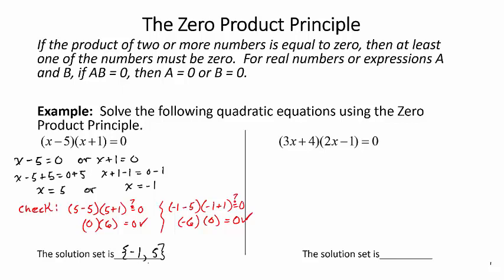You'll notice I'm using the set brackets to indicate the set of numbers that are both solutions to this equation. So let's do this next example. We have the quantity 3x plus 4 times the quantity 2x minus 1 equal to zero. So I know that either 3x plus 4 equals zero, or 2x minus 1 equals zero, right? One of the two factors in that product has to be equal to zero.